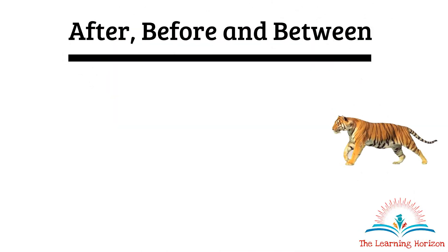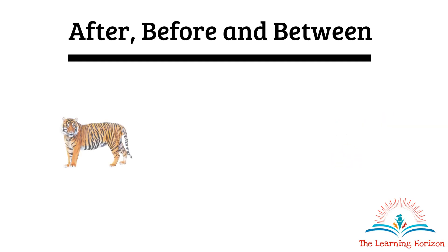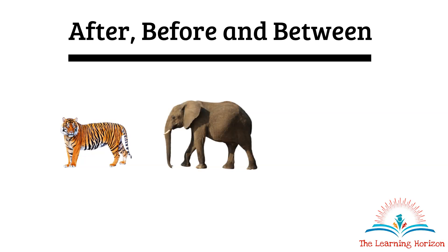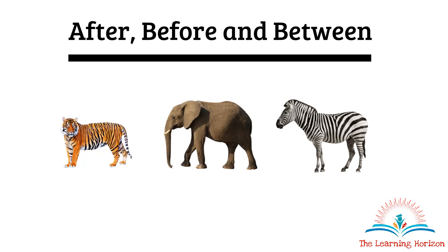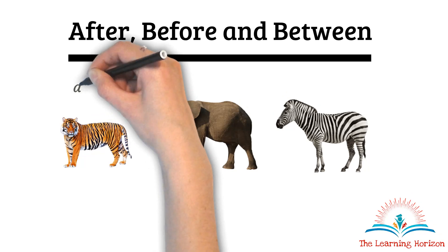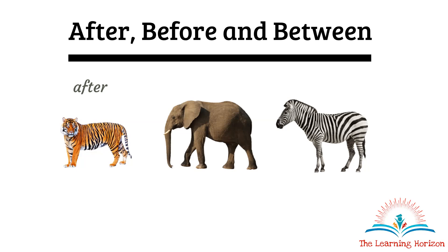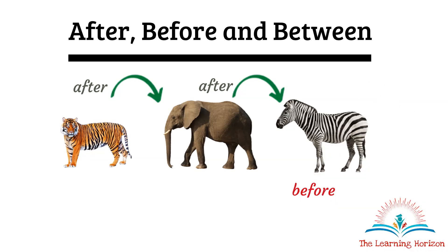First we have a tiger walking in, then an elephant, then a zebra. We saw that tiger walked in first. Which is the animal that came after tiger? It was an elephant. And then which is the animal that came after elephant? It was a zebra — zebra came in last.